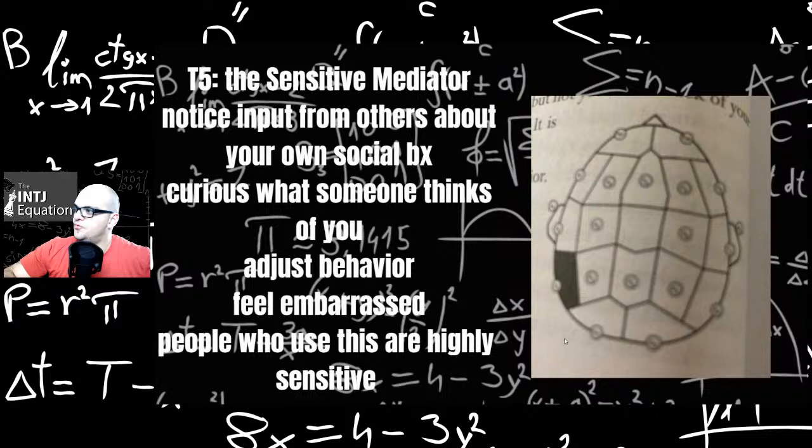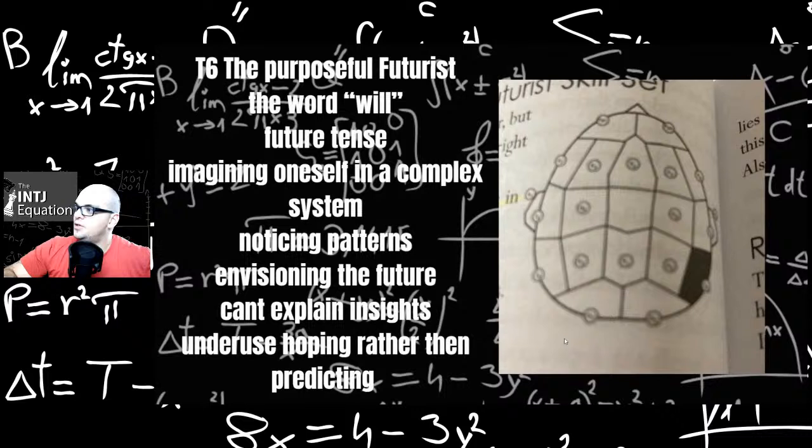The sensory mediator: notice input from others about your own social behavior, curious what someone thinks of you, adjust behavior, feel embarrassed. People who use this are highly sensitive. T6, the purposeful futurist: the word will, future tense, imagining oneself in a complex system, noticing patterns, envisioning the future. Can explain insights. Underused hoping rather than predicting. So there's a lot of people that will hope for the future and there's people like introverted intuitives who will kind of narrow possibilities and come up with the best possible future possibility. It's a very underused function is what he says. So I guess that's something that INTJs and INFJs and high Ni users possibly use.